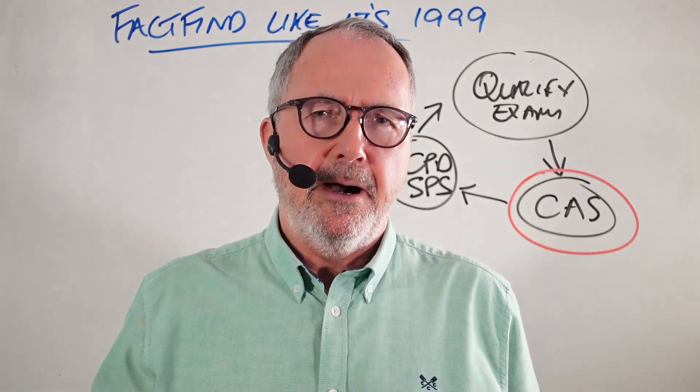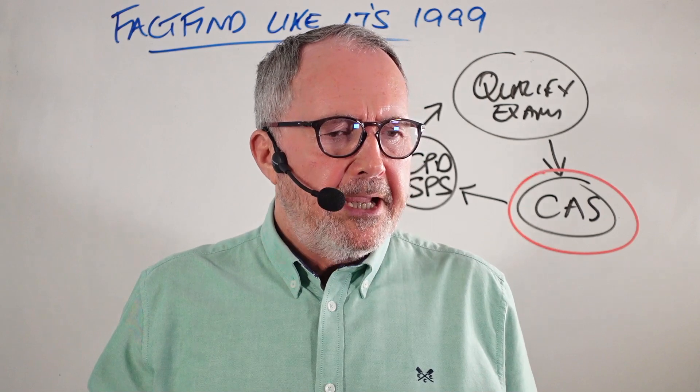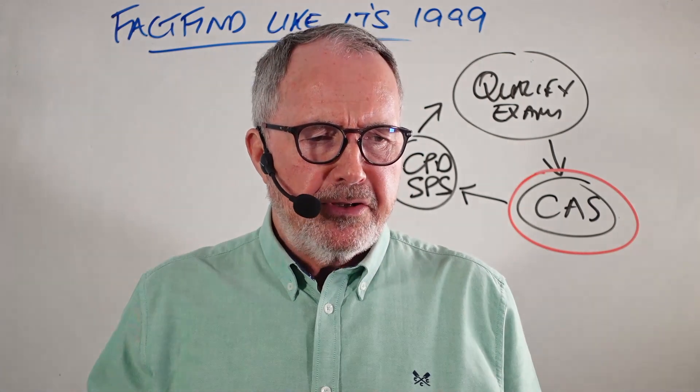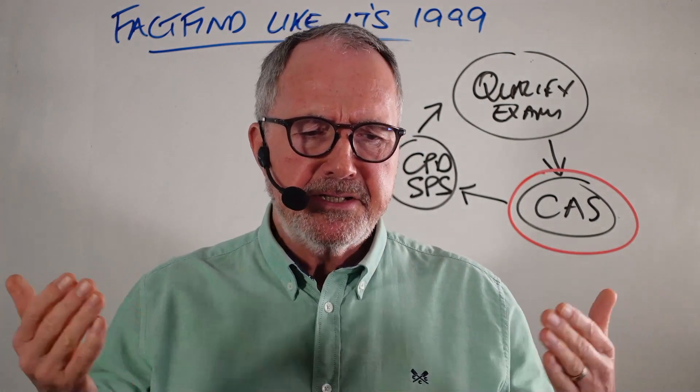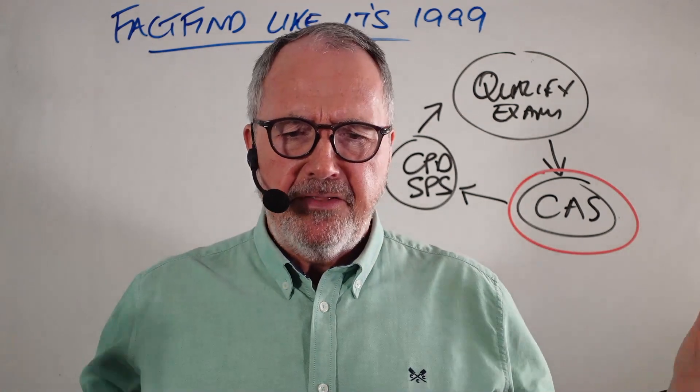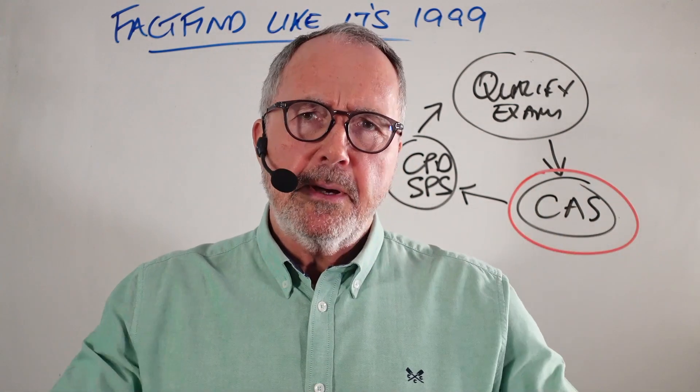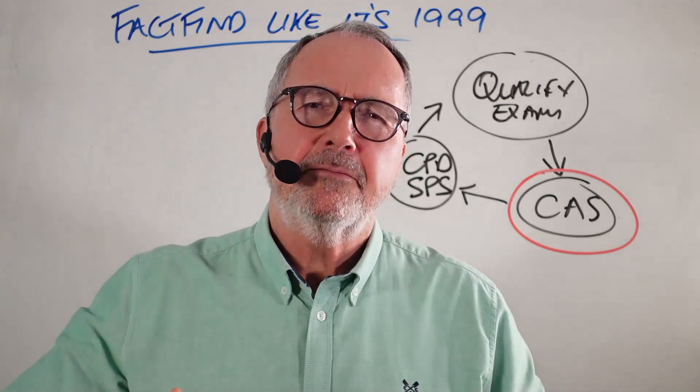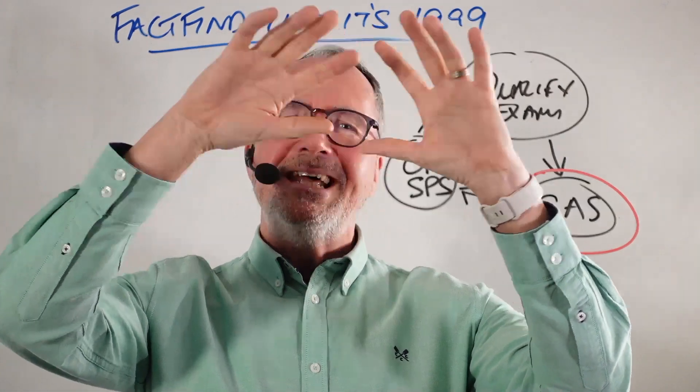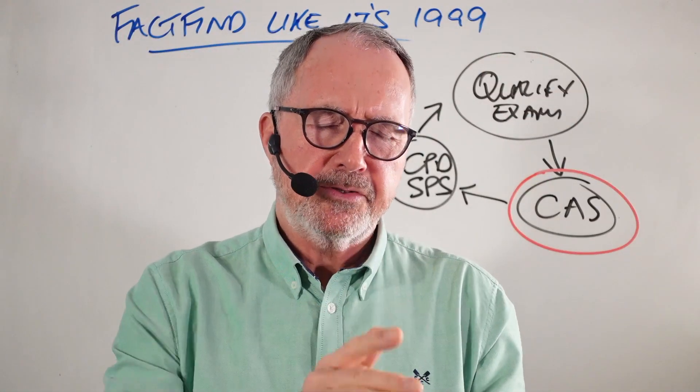When you talk about a mortgage, you talk about income, expenditure, assets, liabilities, bit on the credit side of things - bish bash, mortgage agreed. When you talk about somebody's financial planning, you have to look at a more holistic view.